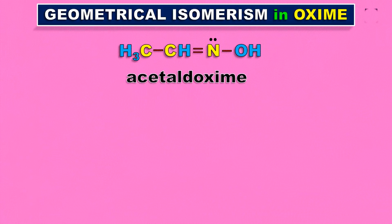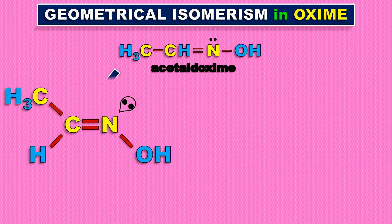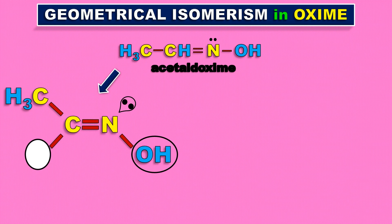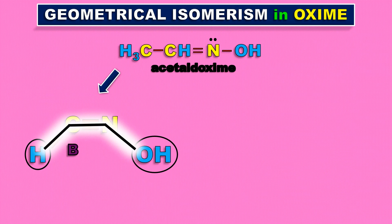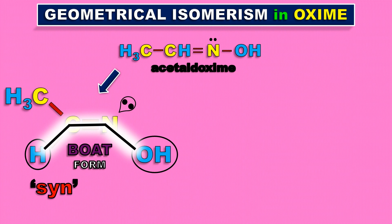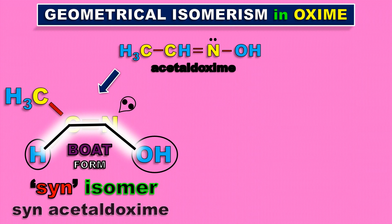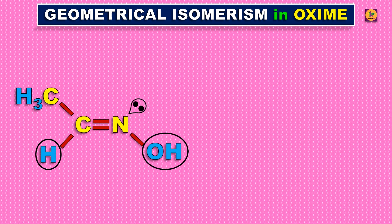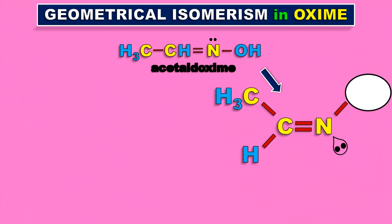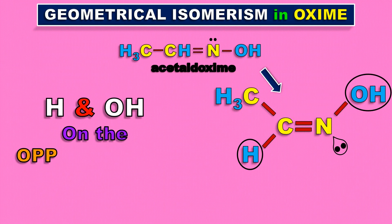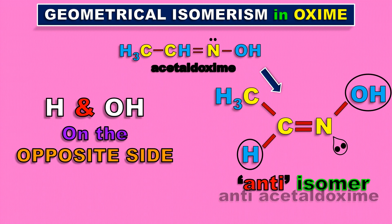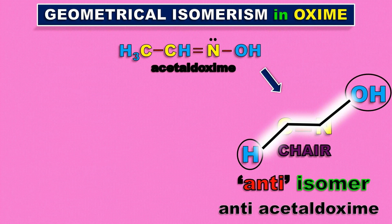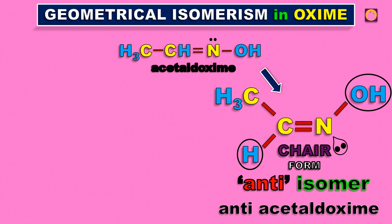Oximes also show geometrical isomerism. Oximes are molecules with a doubly bonded nitrogen atom with an OH group attached, where the hydrogen and OH group show cis-trans isomerism. When hydrogen and OH groups are on the same side it forms the syn form, otherwise known as cis-isomer or cis-acetaldoxime. If that interchanges by breaking the double bond, the OH group and hydrogen are on opposite sides, forming the anti-isomer — that is anti-acetaldoxime.